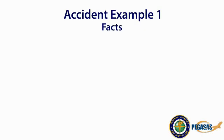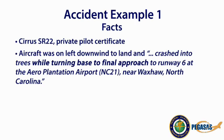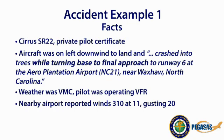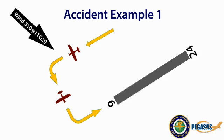In accident example number one, it was a Cirrus SR-22 flown by a private pilot. The aircraft was on left downwind to land and crashed into trees while turning base to final approach to runway 6 at the Arrow Plantation Airport near Waxhaw, North Carolina. The weather was VMC, and the pilot was operating VFR. Winds at a nearby airport were reported at 310 degrees at 11 knots gusting to 20 knots. The airport is described as tricky due to runway slopes and surrounding terrain. During the base to final turn, the pilot had a tailwind, and it's possible the pilot initiated the turn at the normal spot, which resulted in an overshoot and a potential for a cross controlled stall.